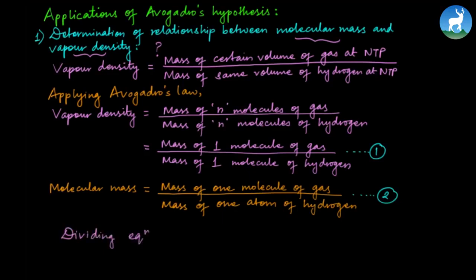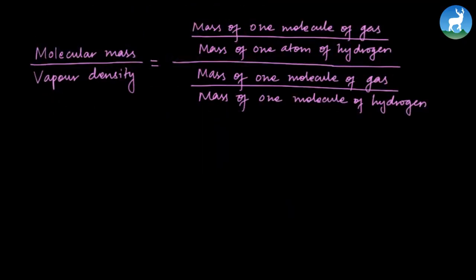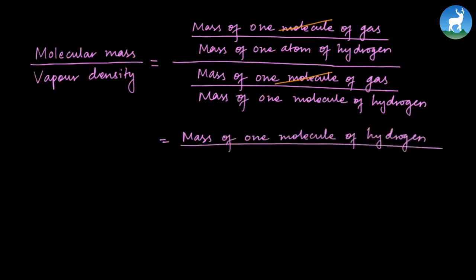We divide equation 2 by equation 1. The mass of one molecule of gas is common and cancels. We are left with the mass of one molecule of hydrogen divided by the mass of one atom of hydrogen, giving us the relation of molecular mass to vapor density.